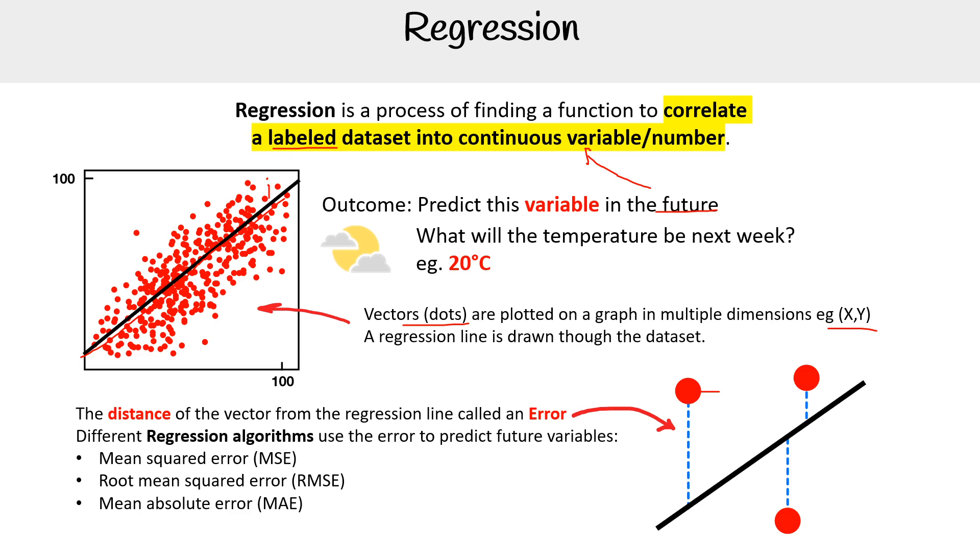What we'll commonly see for this is Mean Squared Error, Root Mean Squared Error, and Mean Absolute Error—MSE, RMSE, and MAE.